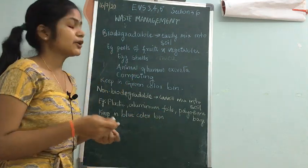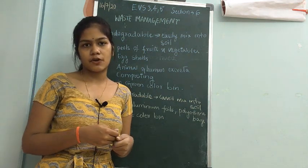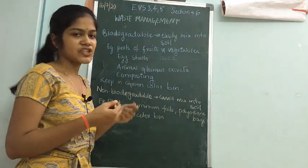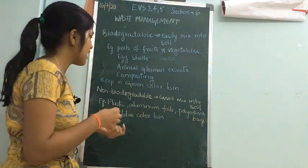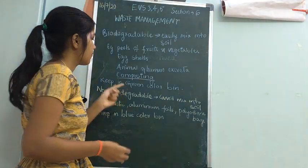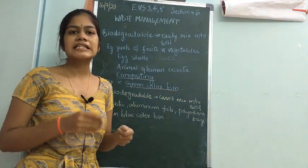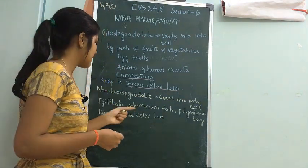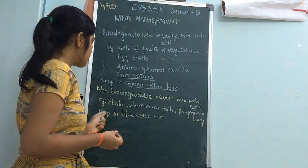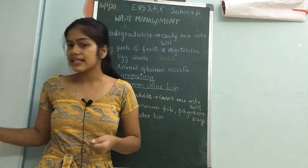To summarize, there are two types of waste: biodegradable and non-biodegradable. Biodegradable waste easily mixes into the soil; examples are peels of fruits and vegetables, eggshells, and animal excreta. Composting is an effective way to decompose biodegradable waste, and it goes in the green bin. Non-biodegradable waste — such as plastic, aluminium foils, and polythene bags — does not mix into the soil and goes in the blue bin.